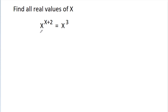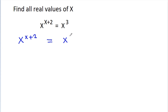In this video, we have given that x power (x plus 2) is equal to x cubed, and we have to find the values of x. So we have x power (x plus 2) is equal to x cubed, and it is x power (x plus 2) minus x cubed is equal to 0.